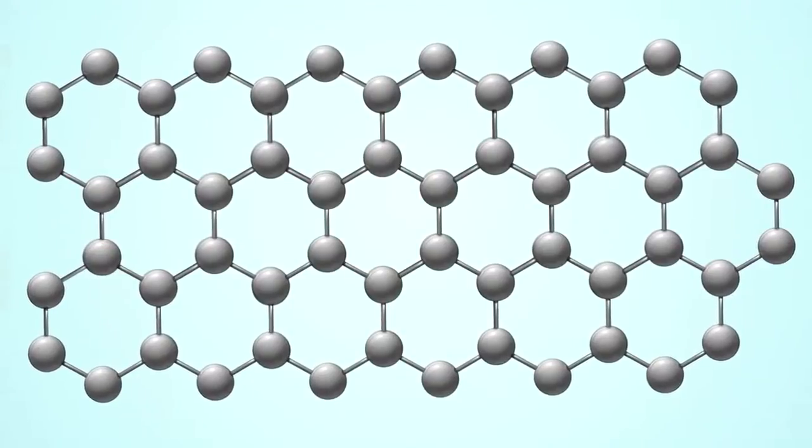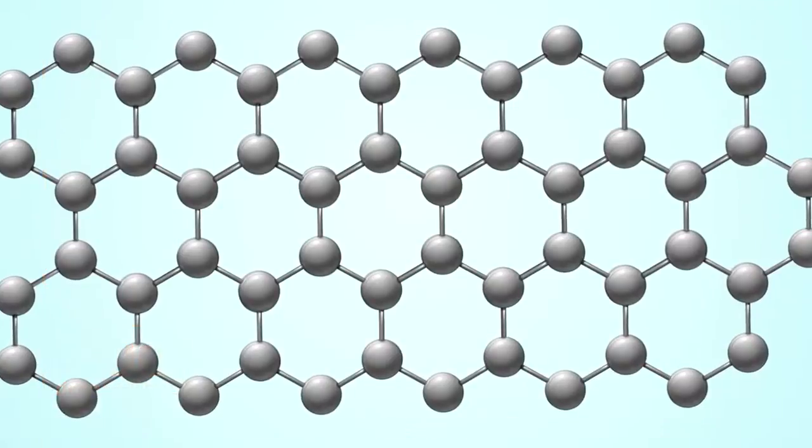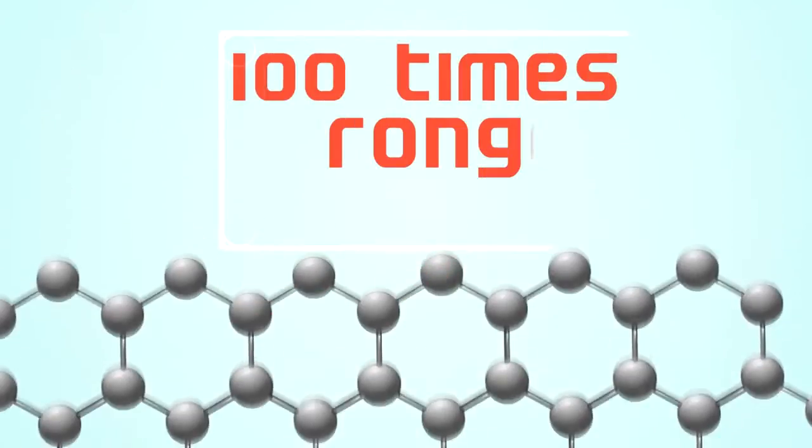Because graphene is only one atom thick, it's considered to be a two-dimensional material. Despite being the thinnest known material, it's also the strongest material ever tested, a hundred times stronger than steel.